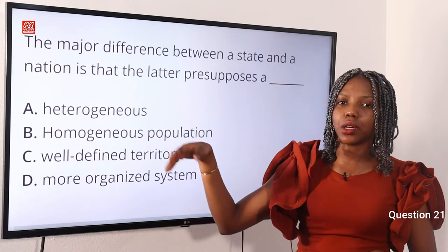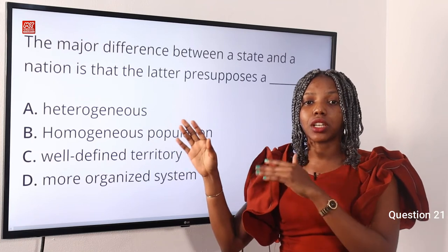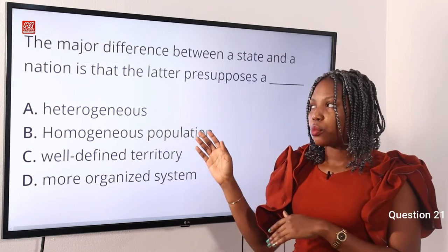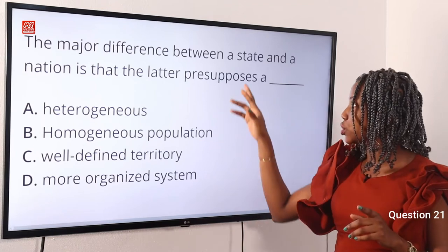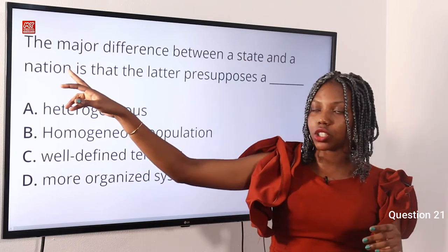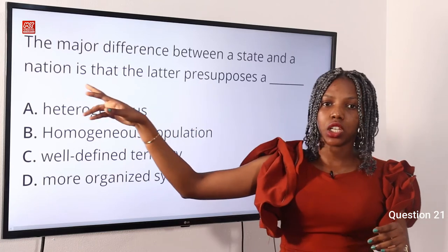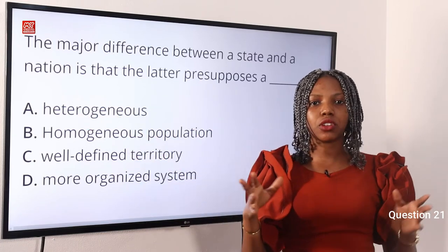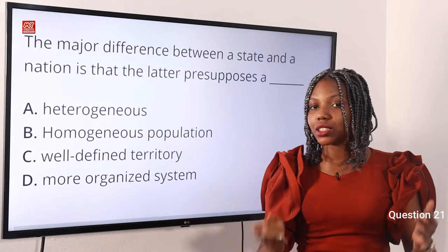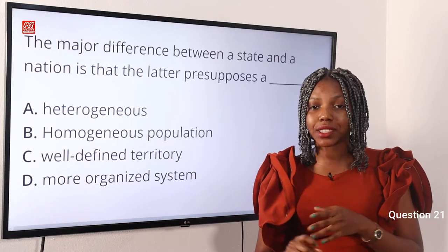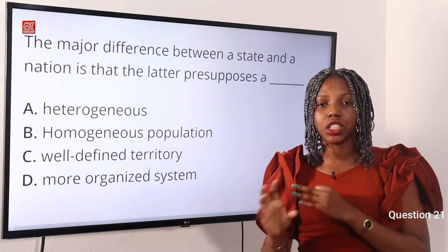The word 'latter' here means the second — it's used to refer to the second term, while 'former' refers to the first term. So we have two terms: a state and a nation. The question is asking about the latter, which is a nation. The elements making up a nation are a group of people, unity, and common consciousness — those are the three important elements in a nation.